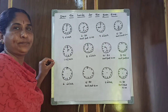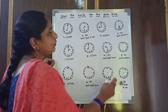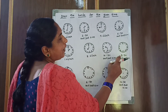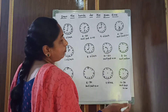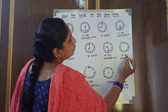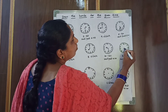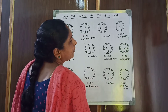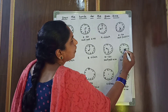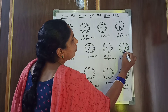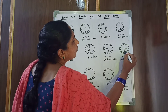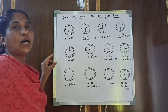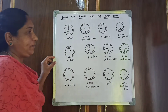Again, 3:30. 3 is the hour hand — short hand. And 30 is the minute hand — long hand. From the middle point, draw the short hand to 3 and the long hand to 6. This is 3:30 or half past 3.